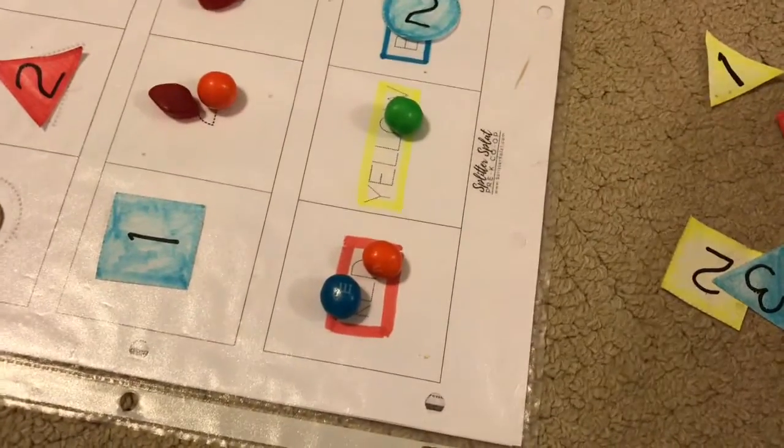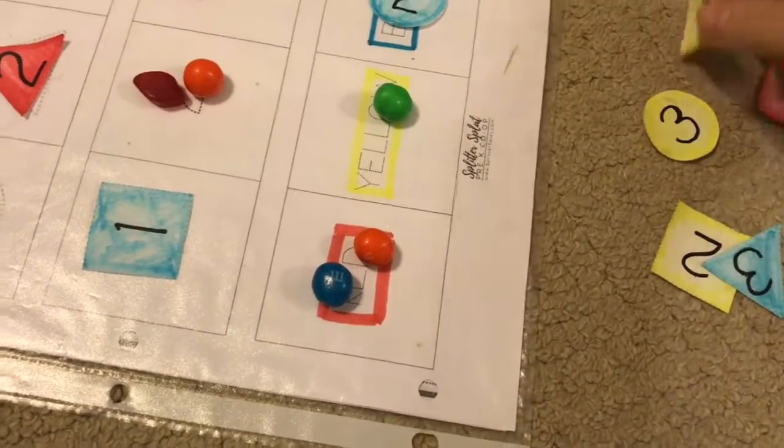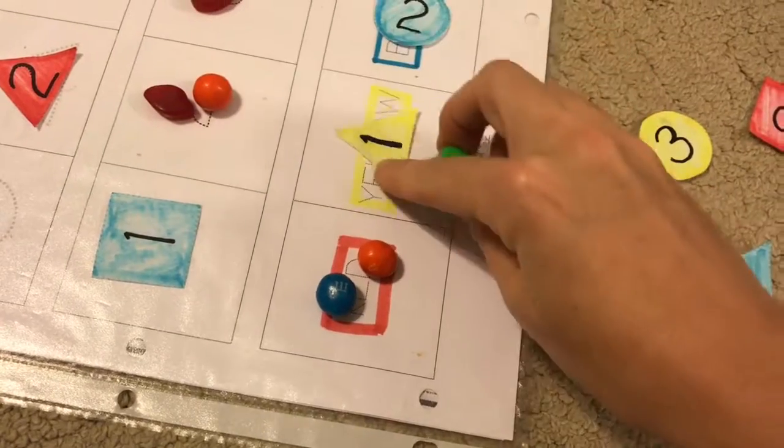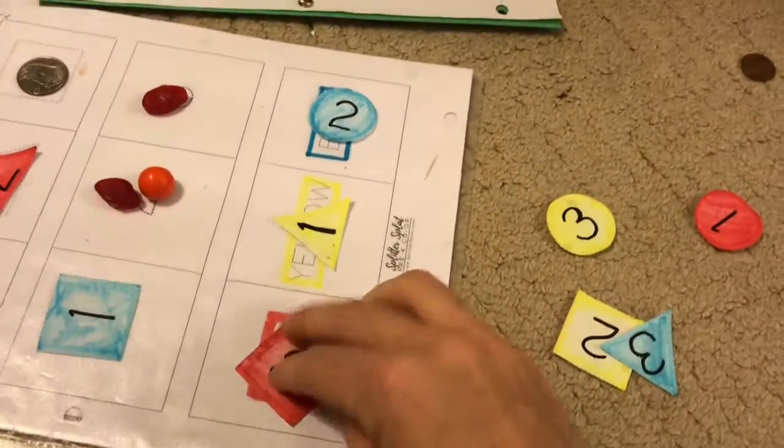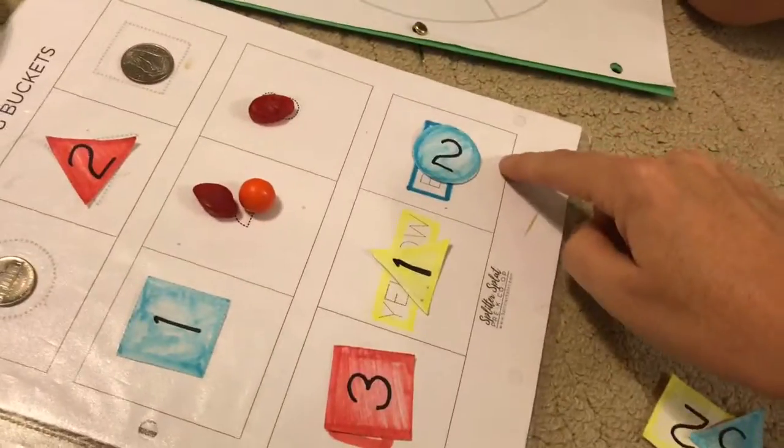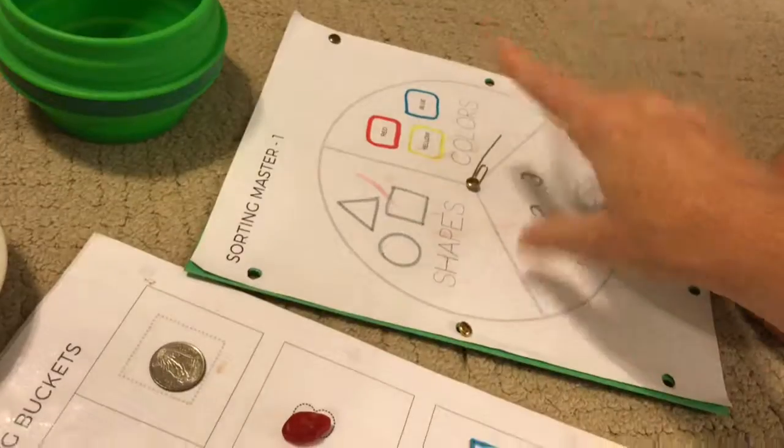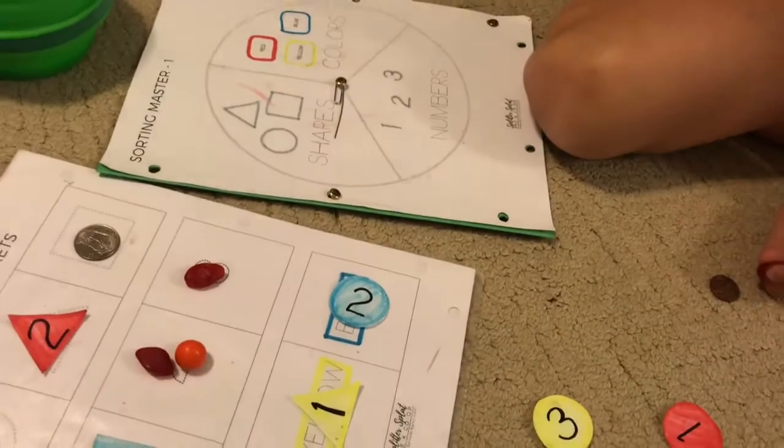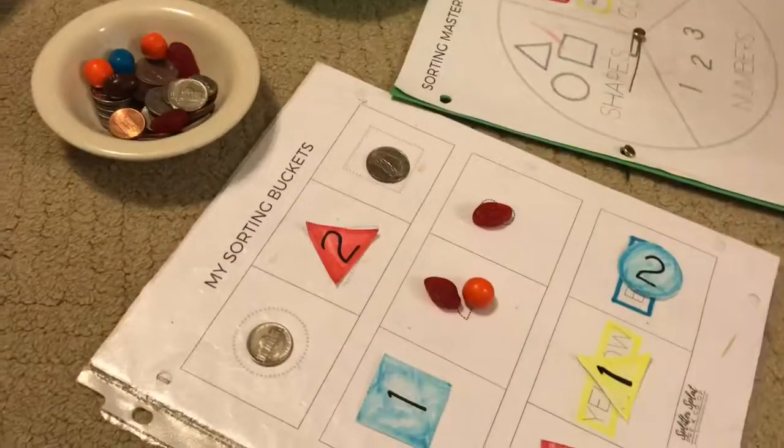So then I would roll colors, and one thing to note is you can choose any color, obviously, any game piece. Now let's imagine that we've been playing for a while and we had already filled up all of the color buckets, and somebody rolled and they went on colors. What happens next, Ava?